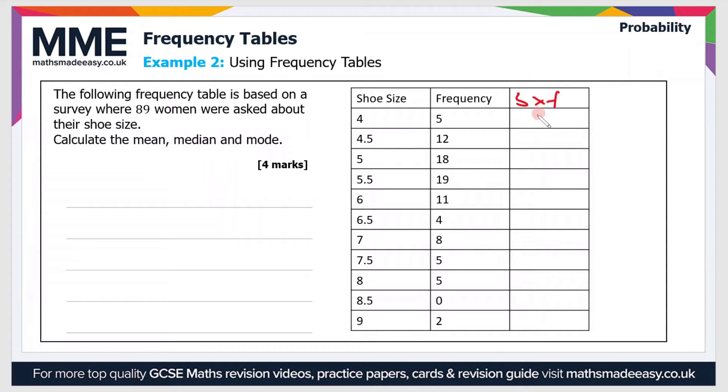If you do that, you should get 20, 54, 90, 104.5, 66, 26, 56, 37.5, 40, 0, and 18. This will allow us to calculate a total shoe size. The total frequency, as we already know, is 89. But if you sum up this shoe size times frequency column, you should get a total of 512.